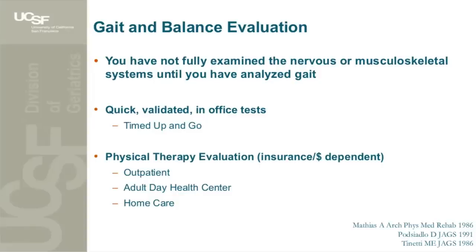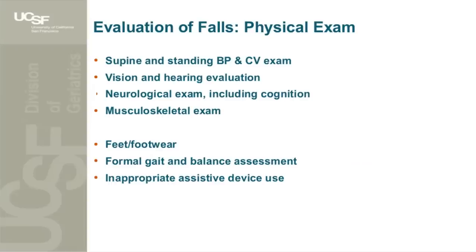In addition to the time component, there is a judgment part — what you observe. If you observe anything unsafe or ineffective suggesting balance or gait impairment, I would recommend the patient be referred to physical therapy. Options include the outpatient setting, an adult day health center, or home care if the patient is homebound. Other relevant aspects of the physical exam include supine and standing blood pressure, vision and hearing, neurologic and musculoskeletal assessment, feet and footwear, and appropriate assistive device use.